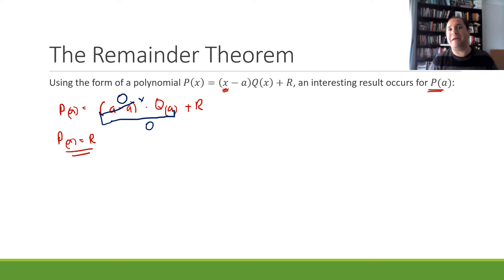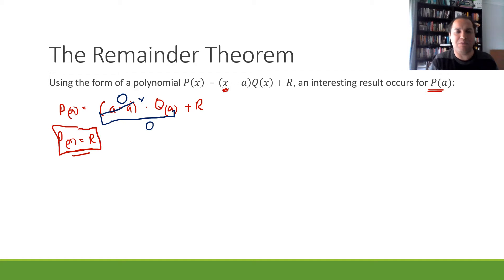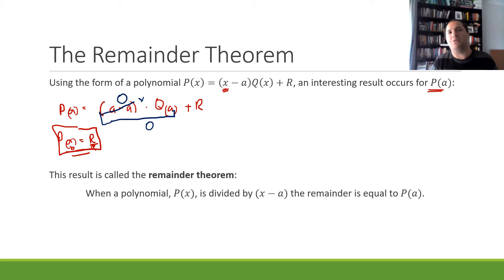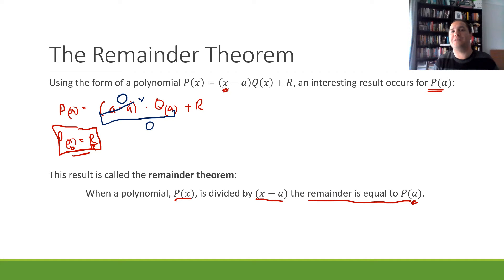So p(a) is going to equal 0 plus r, meaning p(a) is going to be the same value as our remainder. We could get our remainder by applying polynomial division, but that takes time and it's easy to make mistakes. So when dividing by x minus a, the remainder equals the value of our polynomial at x equals a. This result is called the remainder theorem: when a polynomial p(x) is divided by x minus a, the remainder equals p(a).